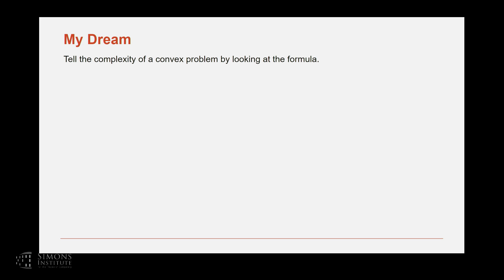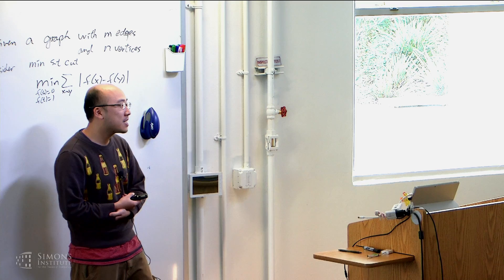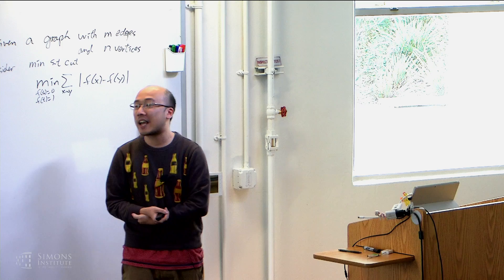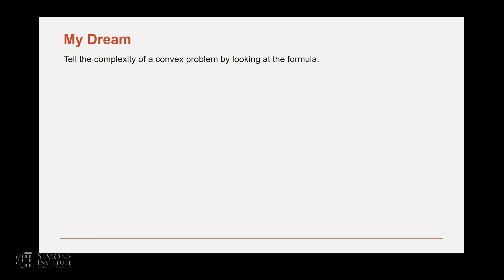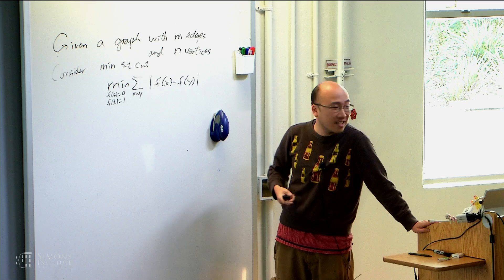Let me first start with something unrelated — talking about my dream. My dream is: given a convex optimization problem, I can look at the formula and tell you what is the optimal way to solve this problem. But this dream is too far away. For example, just look at a very simple problem: we are given a graph with M edges and N vertices, and we consider the min s-t cut problem. This can be written as a convex problem, and then we can ask how to solve it by just staring at the formula.